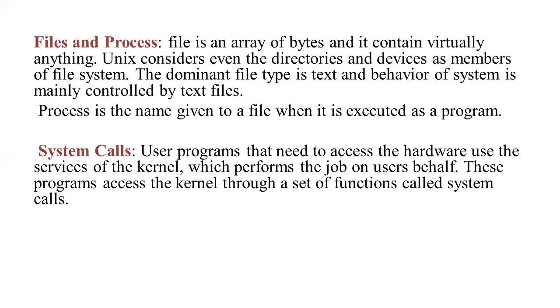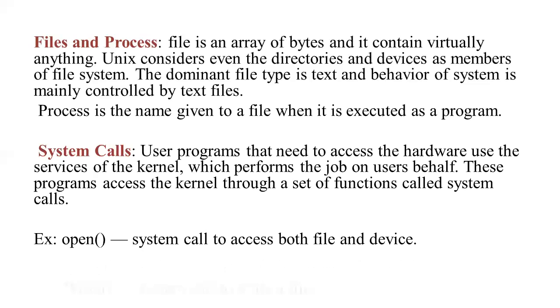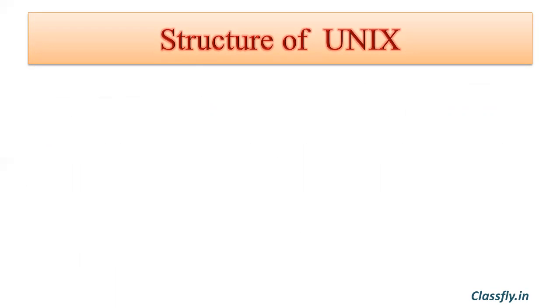System calls are also a part of UNIX architecture. Though there are thousands of commands in UNIX, they all use a handful of functions called system calls. User programs that need to access the hardware use the services of the kernel, which performs the job on the user's behalf. These programs access the kernel through a set of functions called system calls. Examples of system calls are open and write — the open system call is used to access both files and devices, whereas the write system call is used to write to a file.